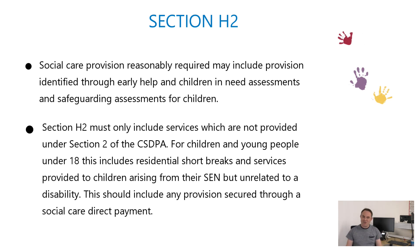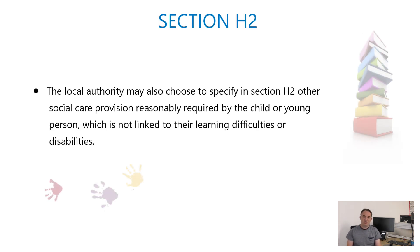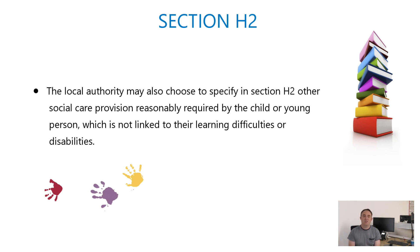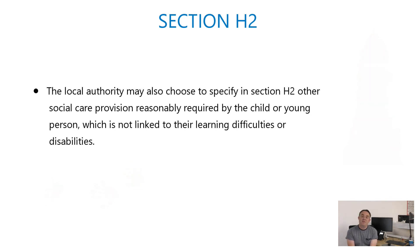Section H2 is essentially an extension of section H1 and includes services not covered under that piece of legislation. Things that can come in here generally include provision secured through a direct payment provided by social care, residential short breaks, and services arising from SEN but unrelated to disability. The important thing is actually identifying those services in your social care assessments when they've been undertaken.